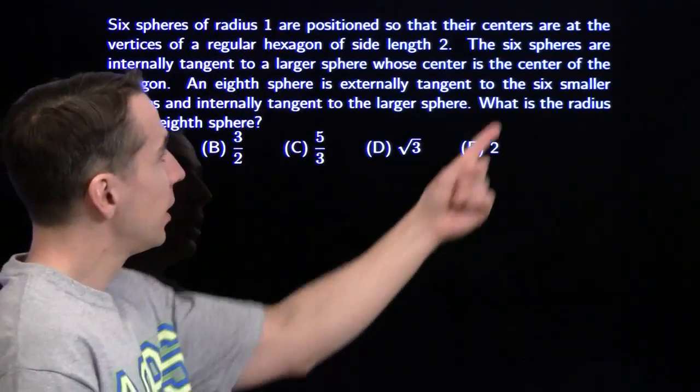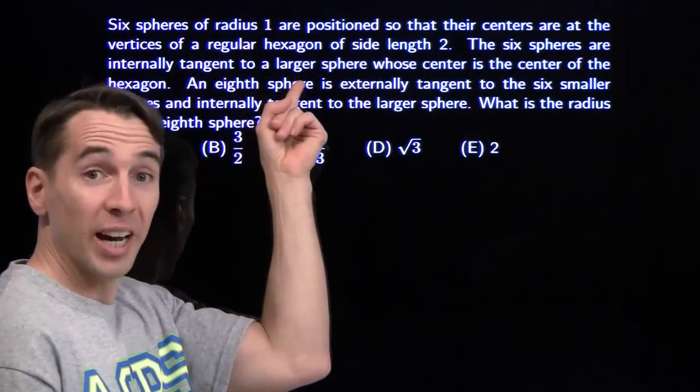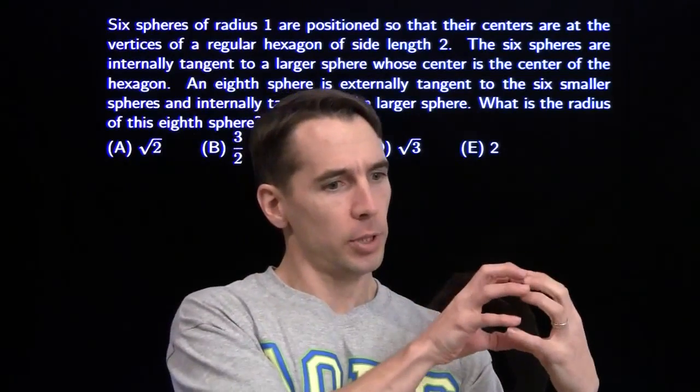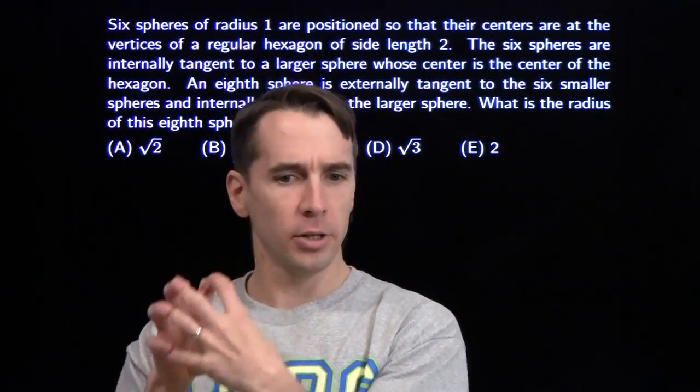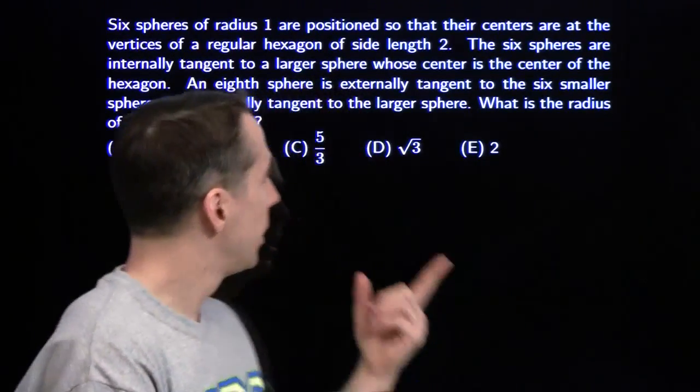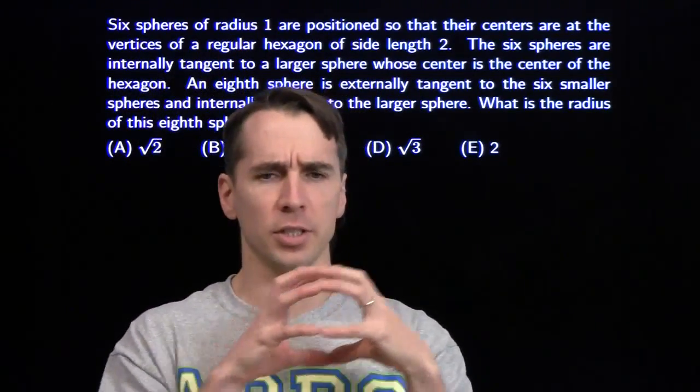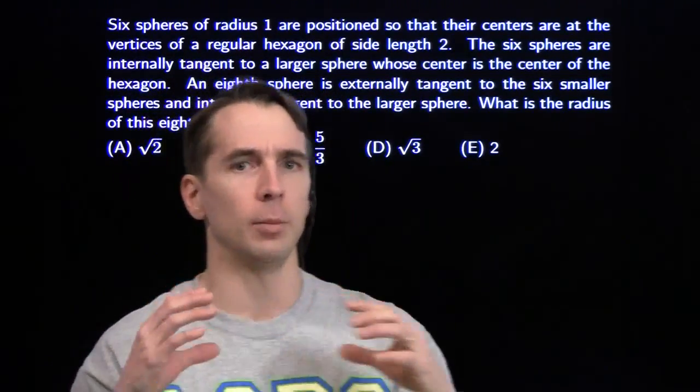We've got six spheres with radius 1. Their centers are at the vertices of a regular hexagon that has side length 2. So we're starting with a regular hexagon, and we're going to put spheres centered at each of the vertices. And since the radius of each sphere is 1, side length is 2, that means each of these spheres is going to be tangent to its two neighbors.